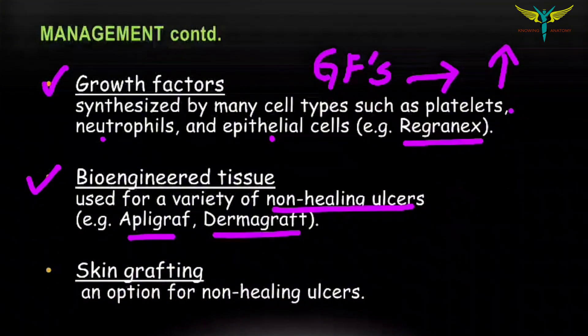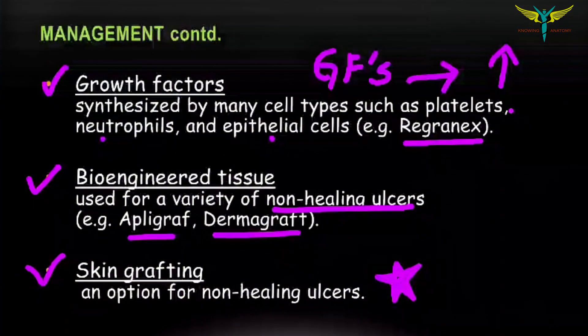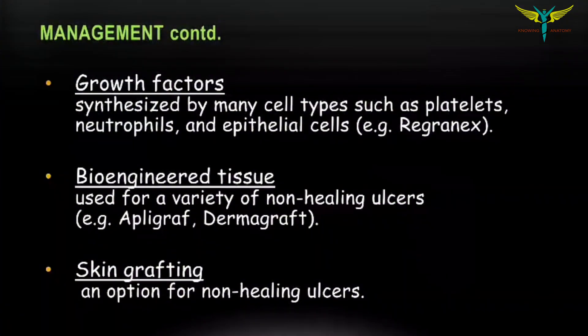Bioengineered tissues such as Apligraft and Dermagraft are used for non-healing ulcers. The last option to manage a venous ulcer is skin grafting — if all the above steps fail, skin grafting comes into action.